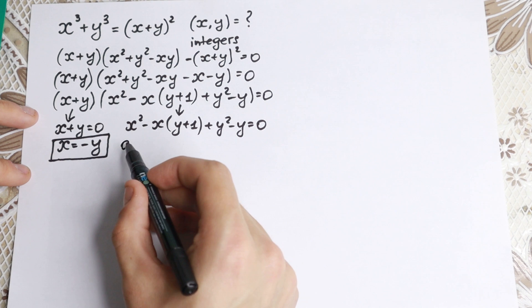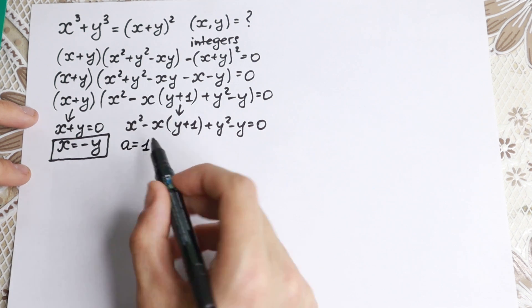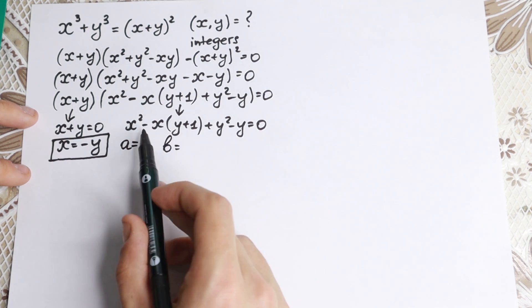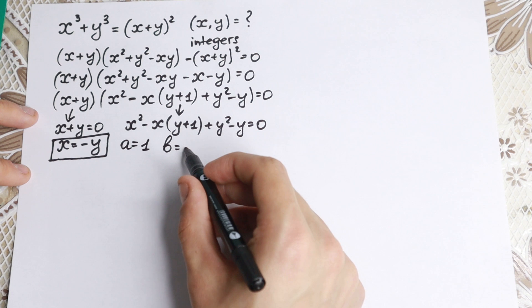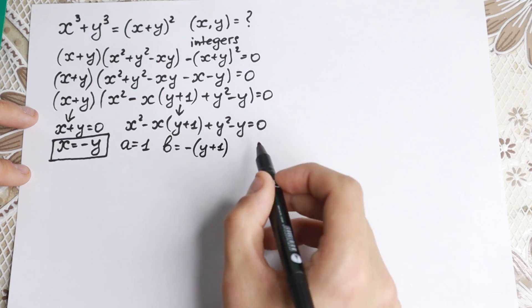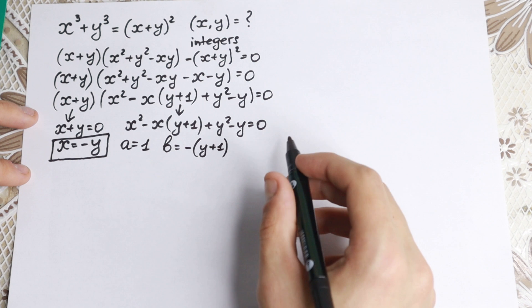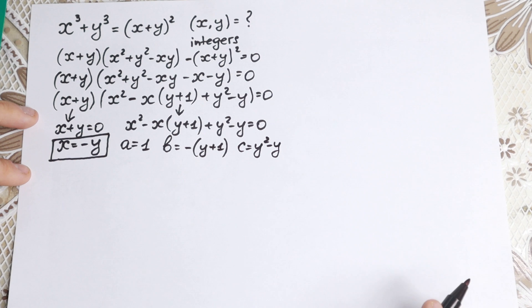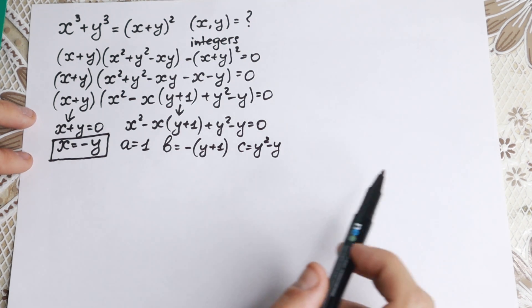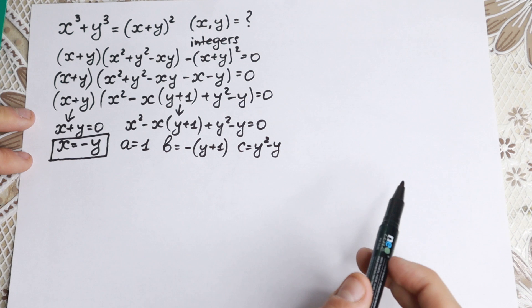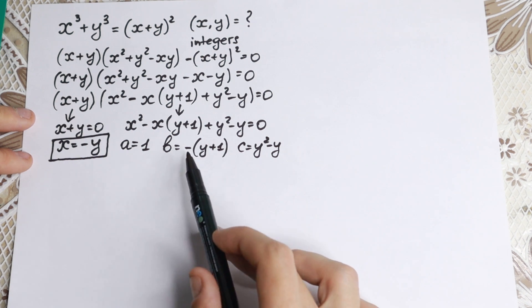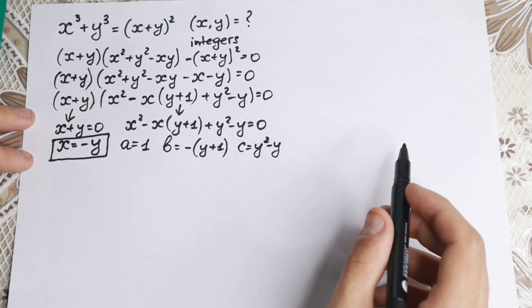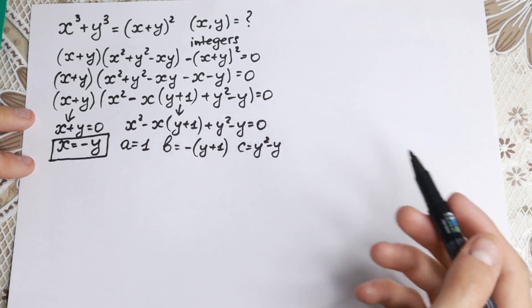So if we write it in our ABC form, we have a equal to 1, because right here we don't have any numbers. b equal to — with our x, we have minus y plus 1, so b equal to minus y plus 1. And for c, we have y² minus y, so c equal to y² minus y. This is a quadratic equation, but we can't easily find our answer because both elements are variables — so we need to work with inequalities right here.